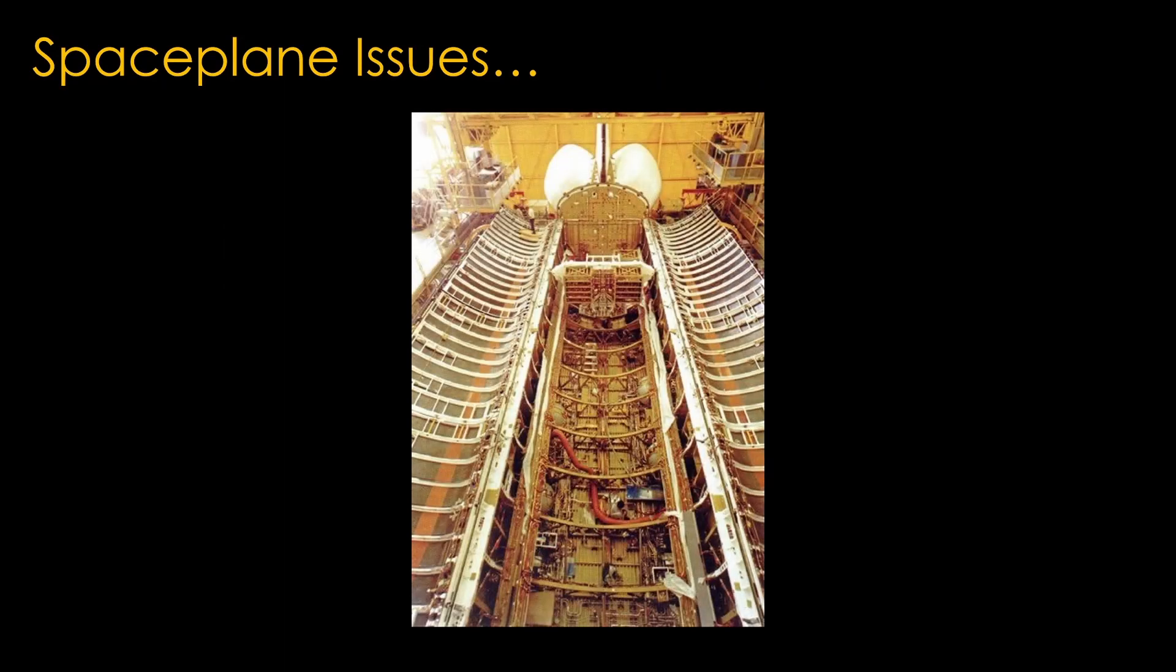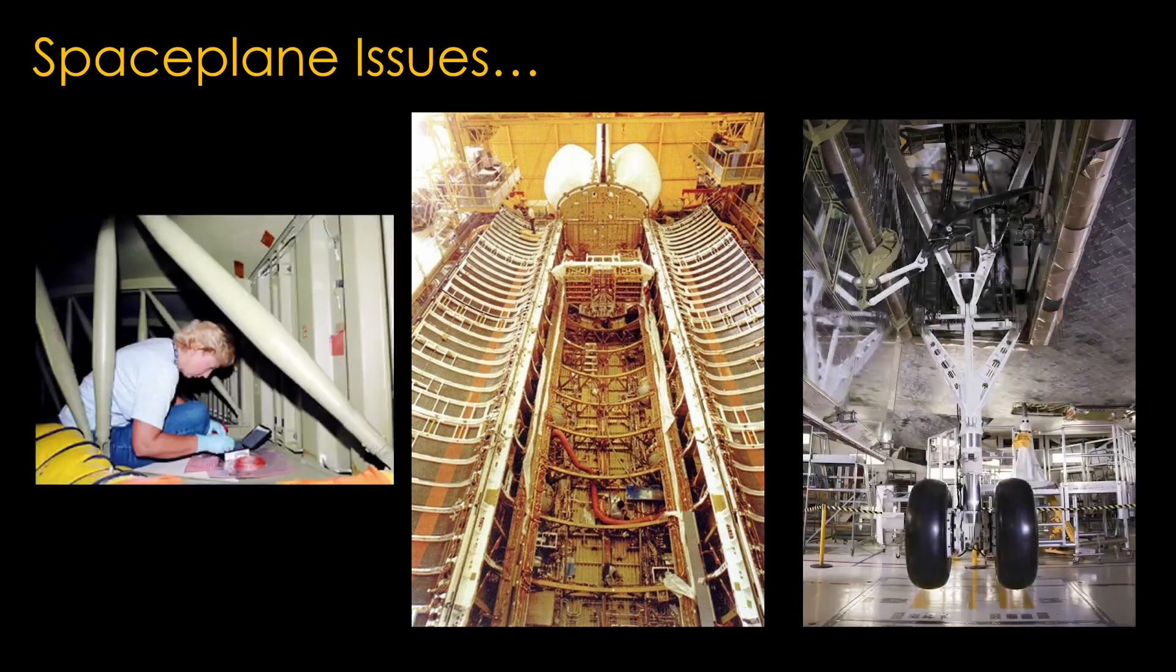It turns out there are a number of issues with the space plane design. The shuttle required a very strong airframe that makes up the bottom half of the fuselage, because the payload doors cannot carry any structural loads. That strong airframe is heavy. It also required large and heavy wings and landing gear.